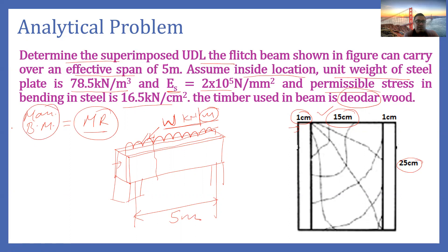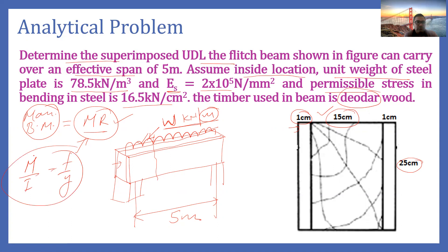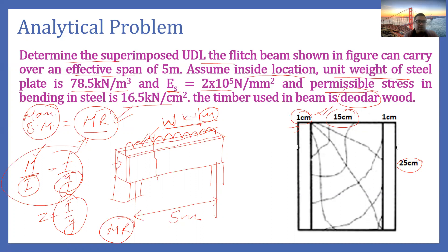The moment of resistance can be calculated using the bending equation. If we want to find the moment of resistance, we use the bending equation M/I = f/y. I can be calculated since the cross-section dimensions are given, and y can also be calculated. Since Z = I/y, we have a direct formula to calculate MR derived in the previous part. We will then compare MR with the maximum bending moment to calculate the w value.